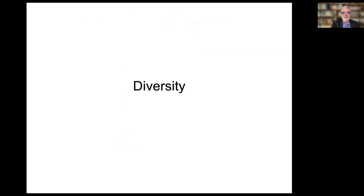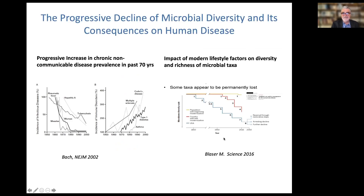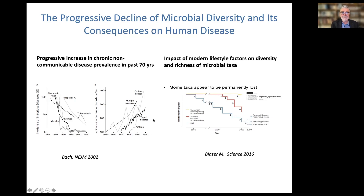Diversity is another feature of a healthy ecosystem. Looking at the microbial diversity in individuals living in western countries since the mid-19th century, there has been a progressive decrease which is continuing — with a later onset in developing countries, and a delayed and smaller decline in the few remnants of peoples around the world who still live in their hunter-gatherer lifestyle.